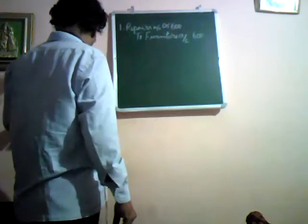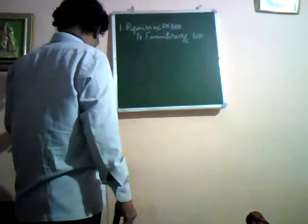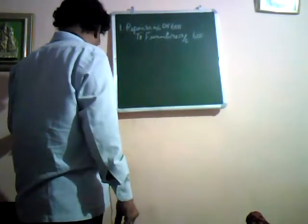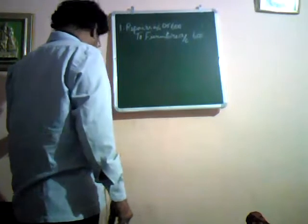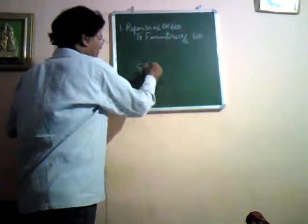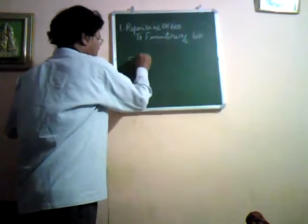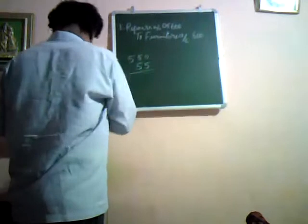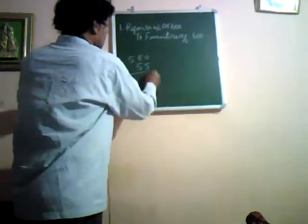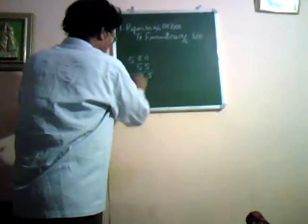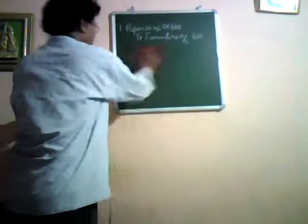Second one: goods purchased from a merchant amounting to Rs. 55 had been posted to the credit of his account as Rs. 550. The actual purchase is Rs. 55, but it was posted as Rs. 550. The difference is Rs. 495.